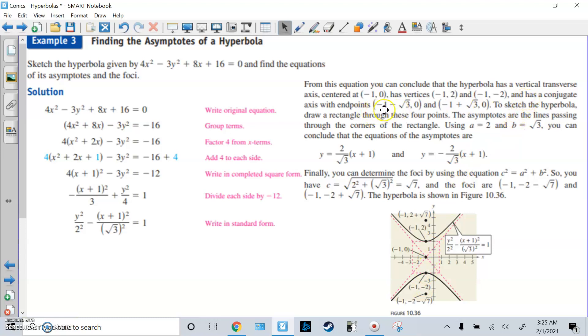And it has conjugate axis endpoints at negative 1 minus root 3, and then negative 1 plus root 3, because we're going to add and subtract b from the x value going left and right. Draw the rectangle through those four points. Find the asymptote equations using a is 2 and b is root 3. We conclude the asymptotes are y equals 2 over root 3, that's the slope, times (x plus 1), then y equals negative 2 over root 3 times (x plus 1).